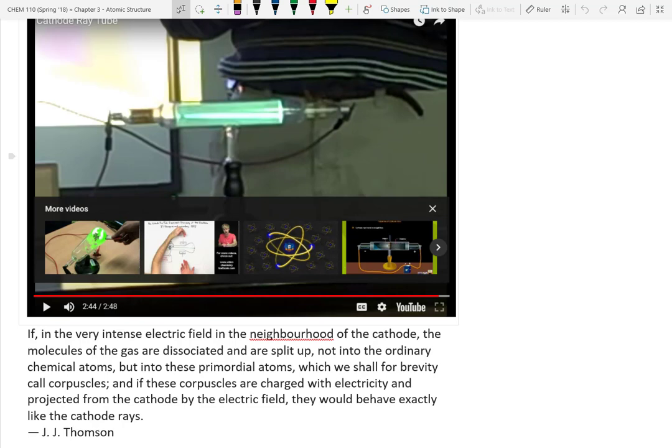Thomson called them 'primordial atoms' or 'corpuscles' in his quote about molecules being dissociated in intense electric fields into these primordial atoms. Does anybody know what we call these today? Electrons. The negative pole pushed away the beam — opposite charges repel — so he knew it must also have a negative charge.